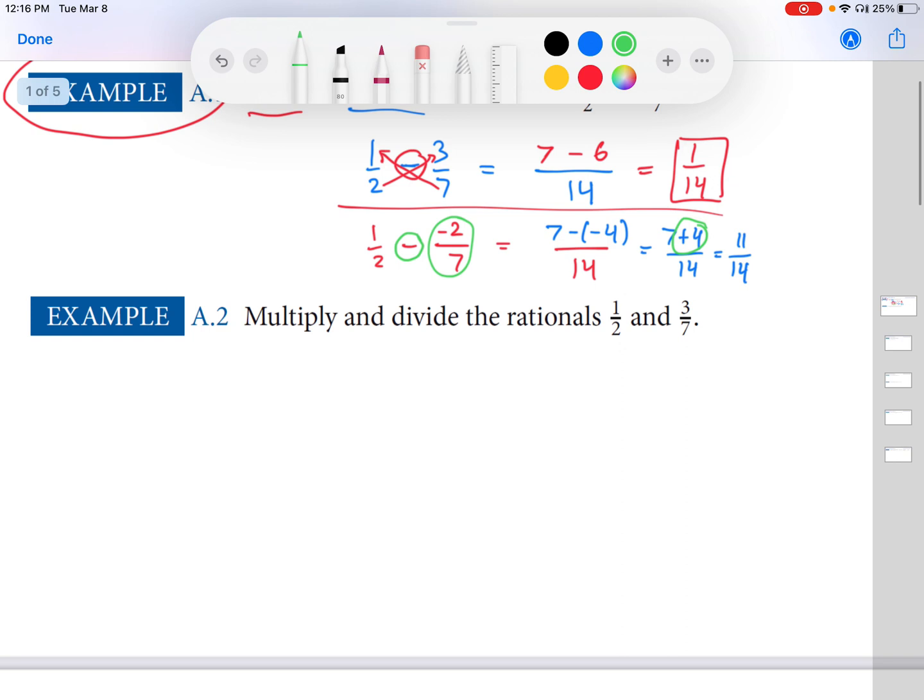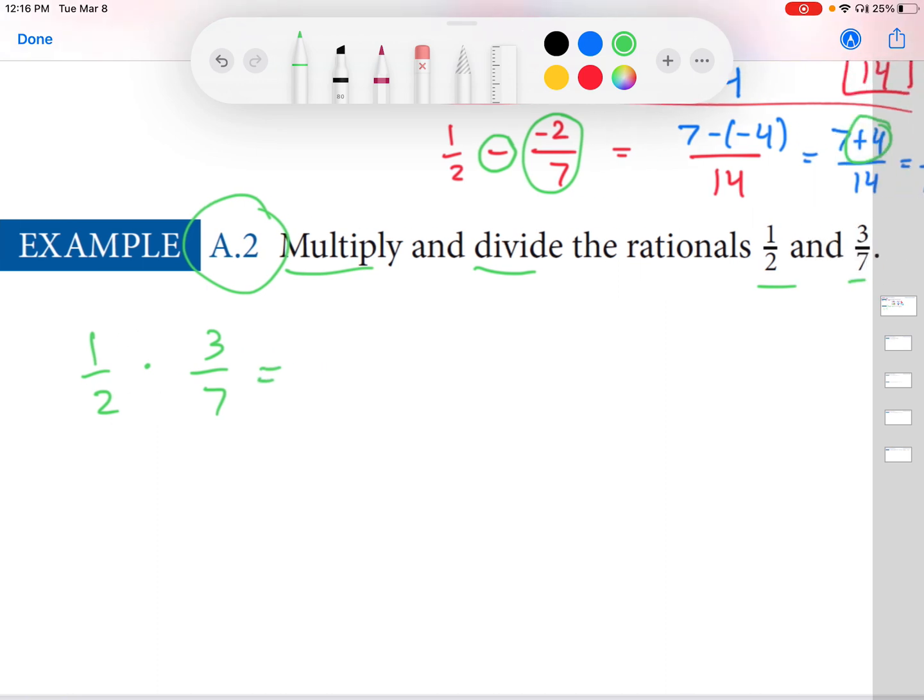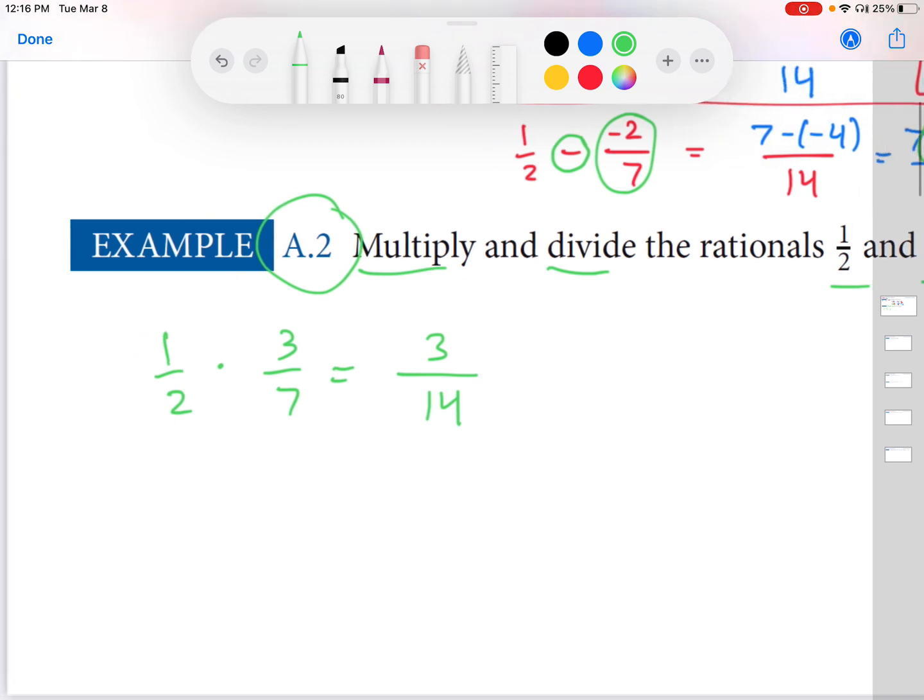And so to wrap this up, let's do this second example here. So what if I want to multiply and divide these rational numbers? Well, the multiplication part is pretty straightforward. So multiplication, as we kind of just used above, is multiplying the numerators together. I get three, multiplying the denominators together, I get 14, and that's it. I might want to simplify if there are any factors that each number in the numerator, denominator have in common, but that's not always a requirement. So this is where we'll stop.